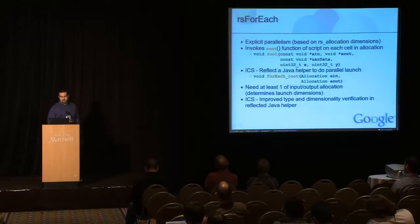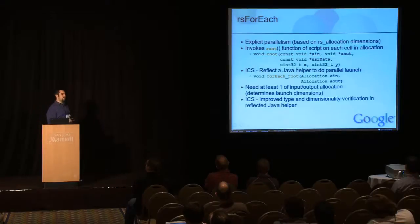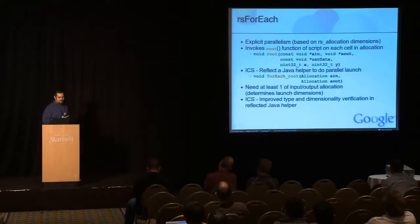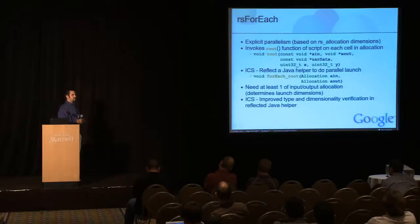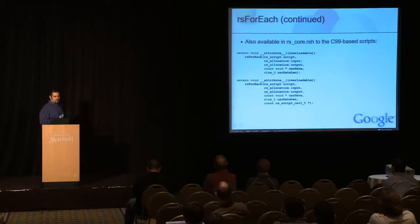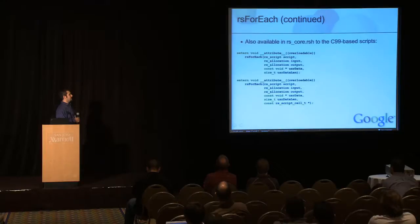In Ice Cream Sandwich, we improved a lot of the type and dimensionality verification on the Java side. Scripts have root functions, and forEach root is the Java-reflected version of that. We also allow people to call forEach within a script, so scripts can actually kick off parallel other scripts. The RS for each function on the C99 script side basically provides the signatures for invoking this functionality.